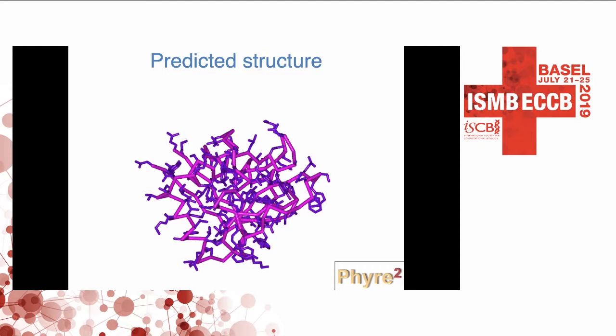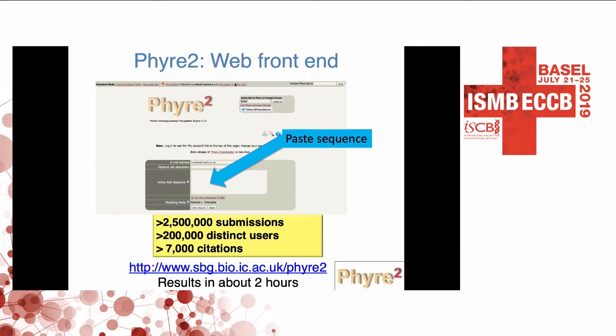This is what the FIRE web server looks like. We take a very simple approach, making it easy for the user. All you have to do is paste in your amino acid sequence, provide your email address so we can let you know when the prediction has been made, and then hit search. There are no parameters for the user to worry about. Because of that, the resource has been very widely used — it's had more than 2.5 million submissions and more than 200,000 unique users, and the different publications have received